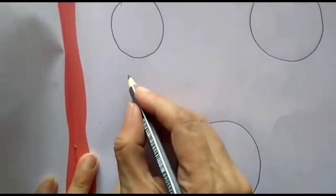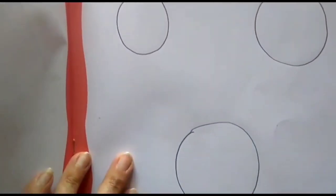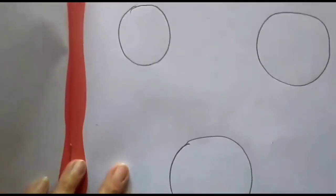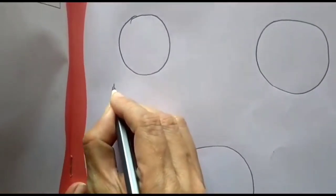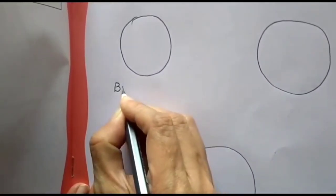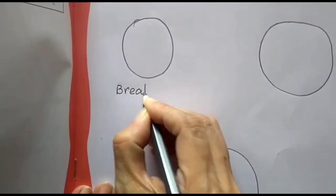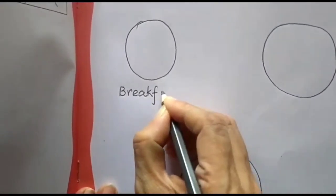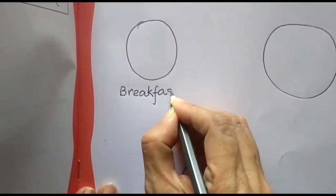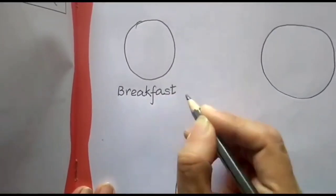First, you will write the word breakfast, lunch and dinner here. Here, the way I am writing. Write B-R-E-A-K-F-A-S-T. Breakfast.